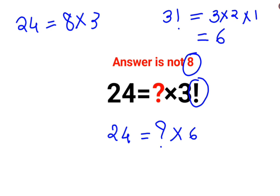So now in this case, if we want to find the value of question mark, you just have to divide 6 on both sides. So this will cancel and you get 4.